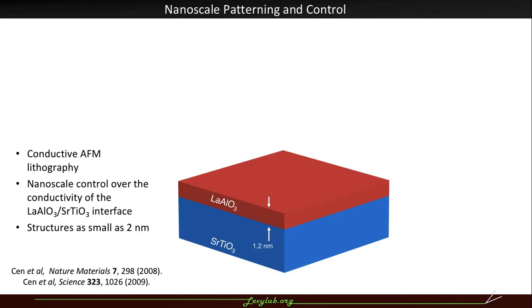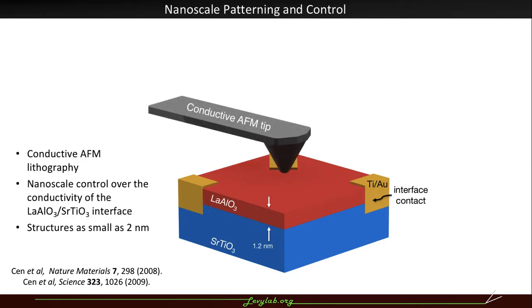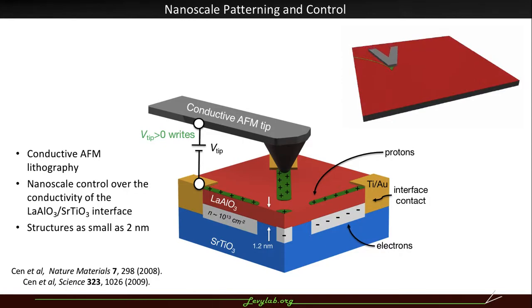We have the interface which is right at the critical thickness so the interface is naturally insulating. We can pattern the interface to make electrical contact and then introduce a conductive atomic force microscope tip. And when we apply a positive voltage to the tip and move it on the surface of the material we can deposit protons which will locally attract electrons to the interface.